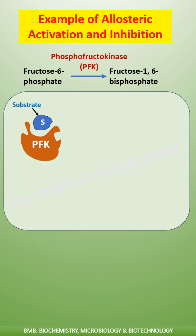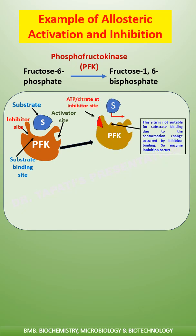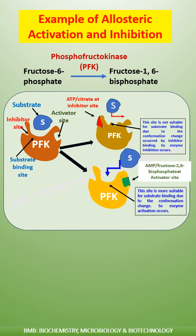Phosphofructokinase is an allosteric enzyme. It has a substrate binding site, an activator site, as well as an inhibitor site. It is allosterically inhibited by high levels of ADP and citrate, whereas it is activated by AMP and fructose 2,6-bisphosphate, which are potent activators of glycolysis.